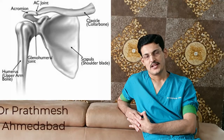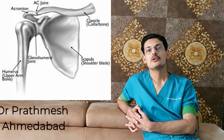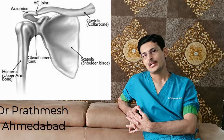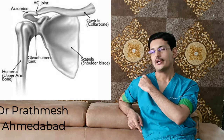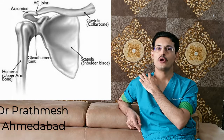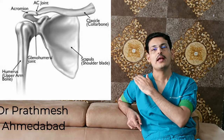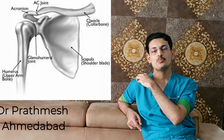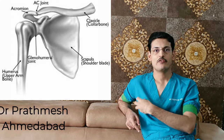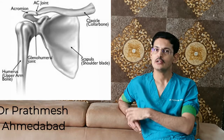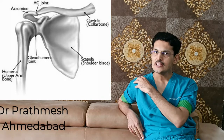Good morning, I am Dr. Pratmanij Jain and I am a shoulder surgeon. Today I will be explaining about acromioclavicular arthritis. The acromioclavicular joint is the joint between the collar bone and the acromion, and it is a superficial part of the shoulder. It is different from the actual shoulder joint, which is deep inside the body.